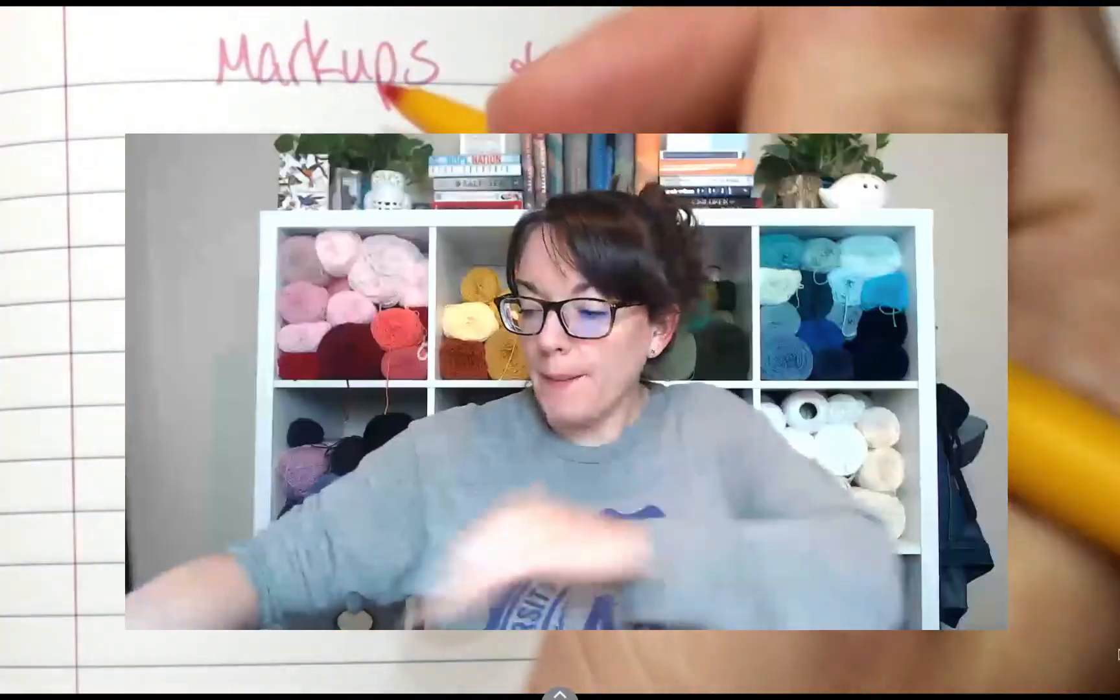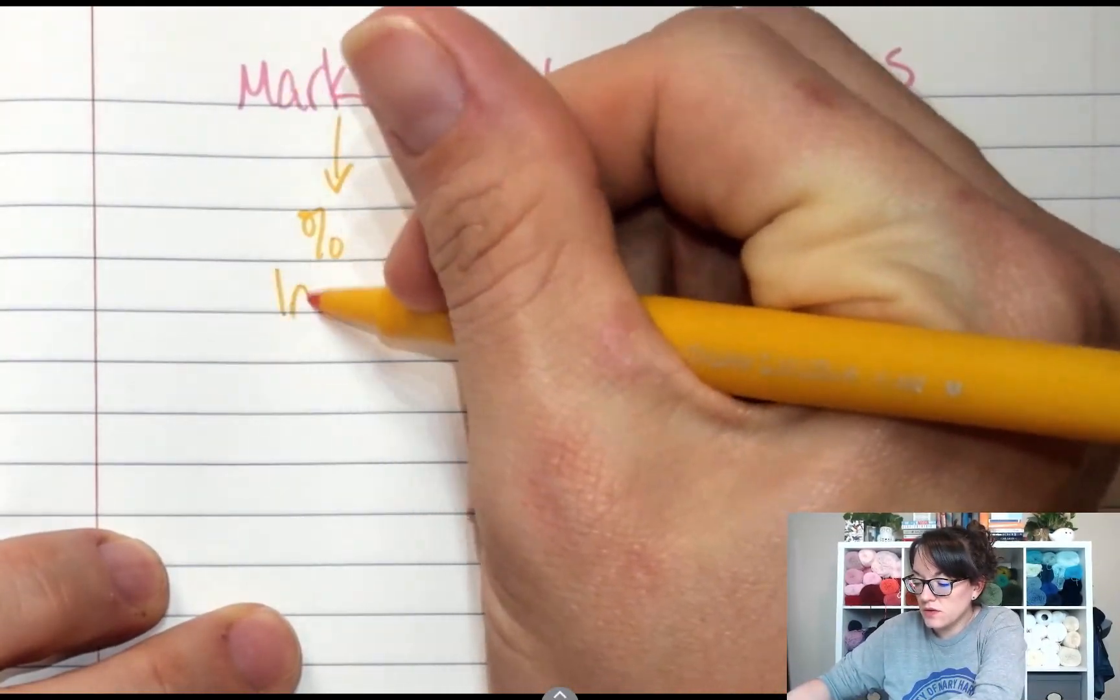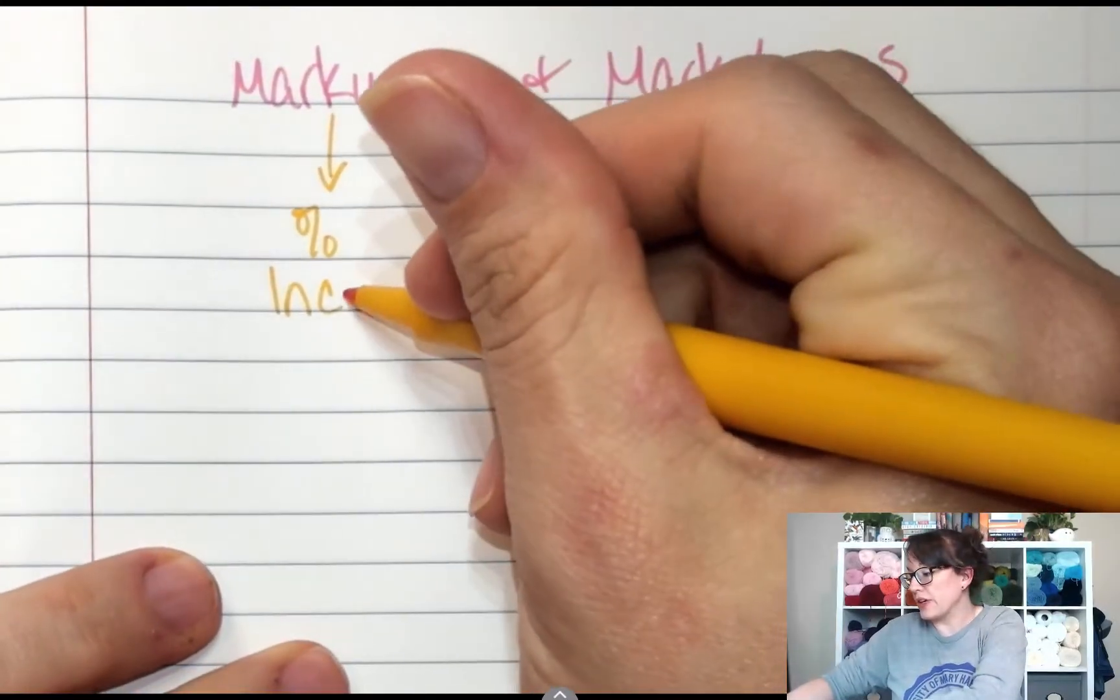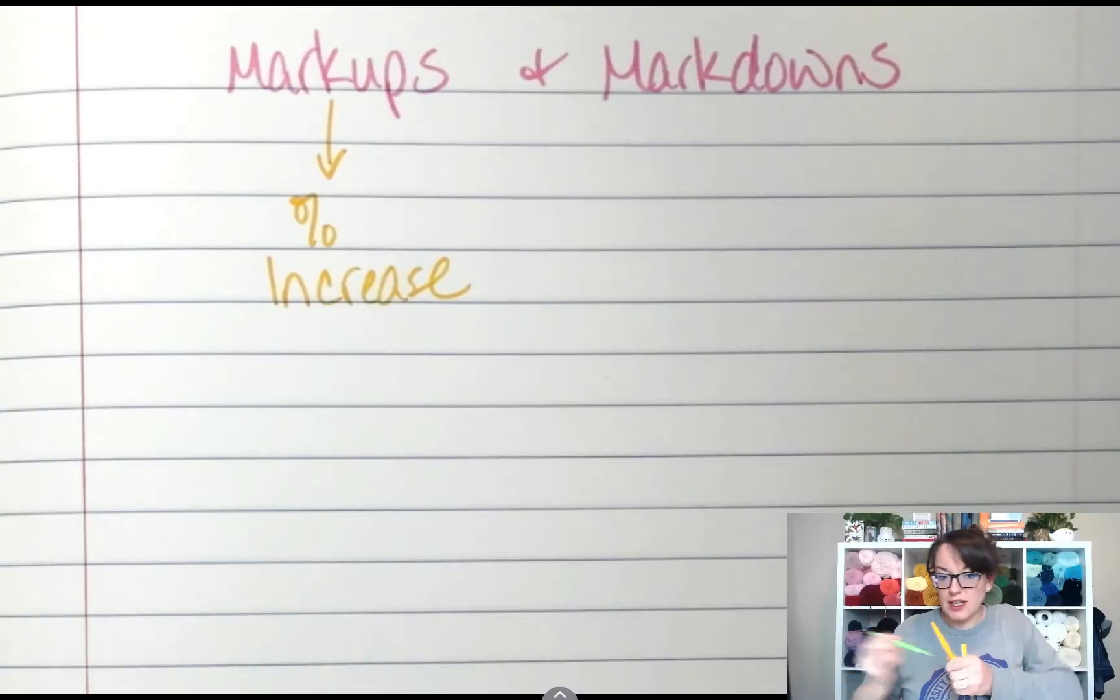So a markup is going to be a percent increase. And a markdown is a percent decrease.